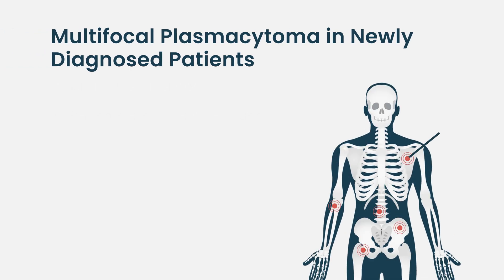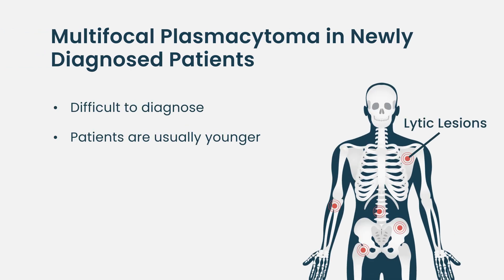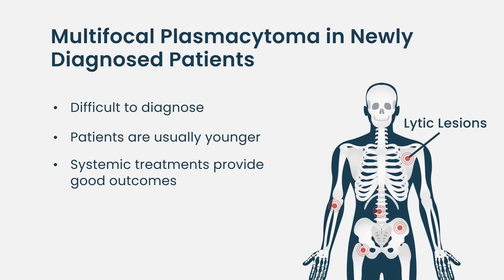A patient usually presents with pain and fractures, then you do a biopsy and find the plasma cells. Most of those patients present with pain, and it's usually diagnosed in younger, newly diagnosed patients. The outcome of those patients is quite good. We treat them with systemic treatment and stem cell transplant if they meet the criteria, followed by maintenance, and they have excellent outcomes when it occurs upfront.